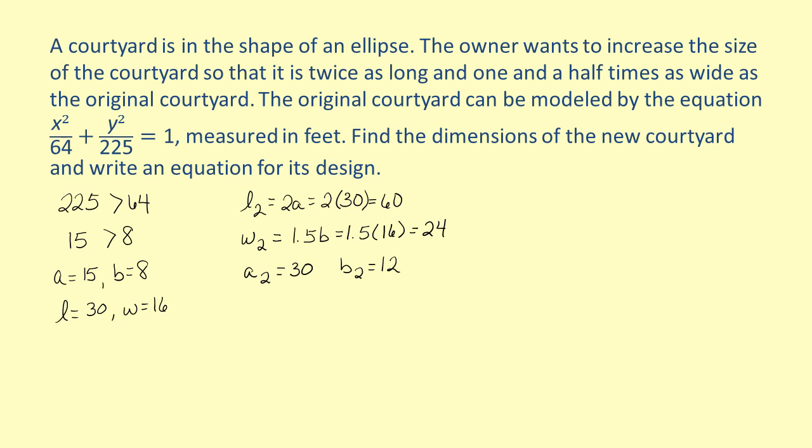Since we have new values for A and B, all we need to do now is square them and substitute them into the equation. If we square A2 and B2, we get A2 squared equals 900 and B2 squared equals 144.